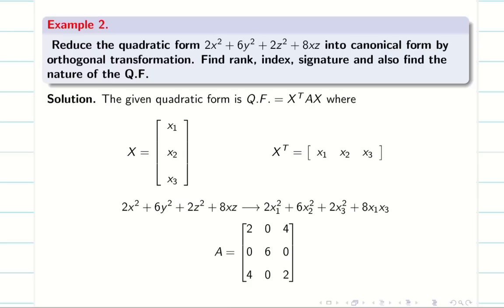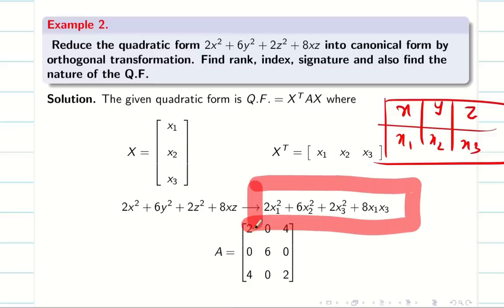First, the problem is given in terms of x square, y square and z square. So x, y, z are the variables. Usually we have variables x1, x2, x3. So now you can convert the problem into x1, x2, x3 like this if you are feeling tough. Or you can directly deal with this also. Because x, y, z, I can give the numbering 1, 2 and 3. So it is very easy.